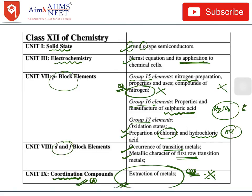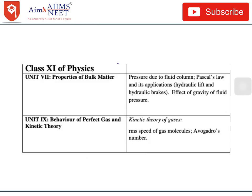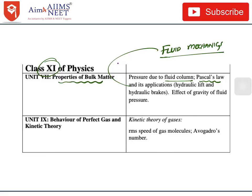Now let's look at the physics part — what is less important and what is deleted. In Class 11 Physics, Unit 7 — Properties of Bulk Matter — pressure due to fluid columns, Pascal's law and its applications, hydraulic lift, hydraulic brakes, and effect of gravity on fluid pressure — in short, fluid mechanics — is not at all important for NEET exam. For AIIMS this is still important, but for NEET you can skip this part entirely.